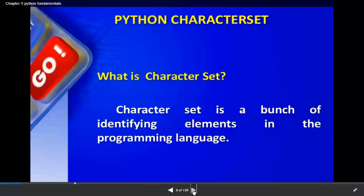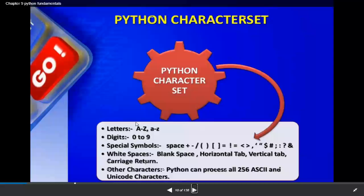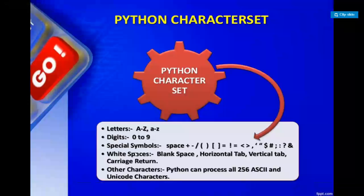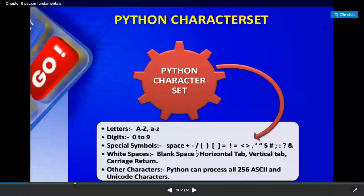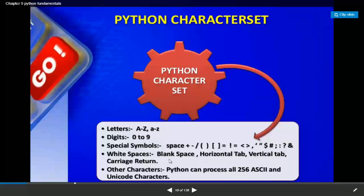We are starting with the character set of the Python language. The character set is a bunch of identifying elements in the programming language - those characters, elements, and symbols which you can use. Python's character set is very vast. You can use all English alphabet letters, both capital and small, digits 0 to 9, and special symbols like space, plus, minus, slash, brackets, equal to. White spaces, blank spaces, and tab characters are also used.